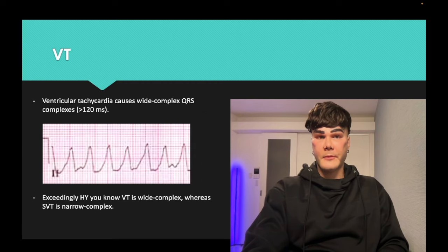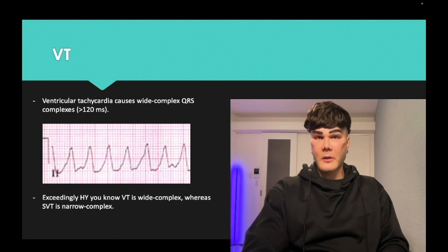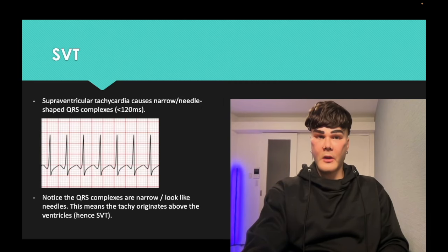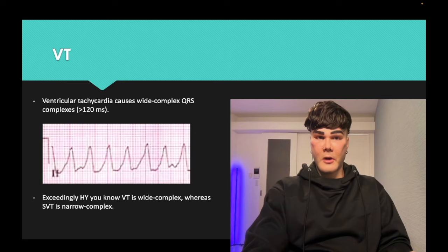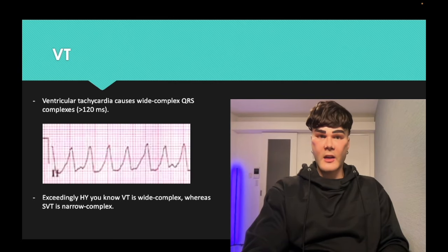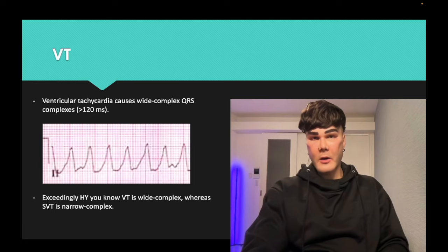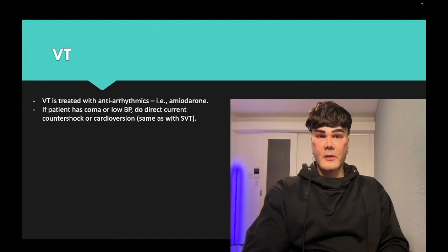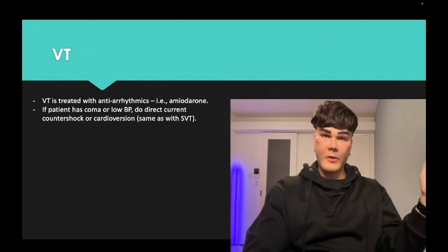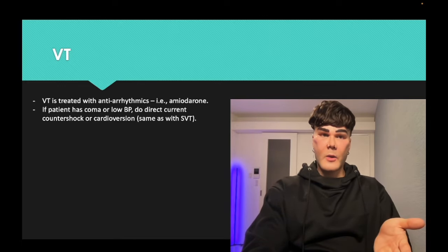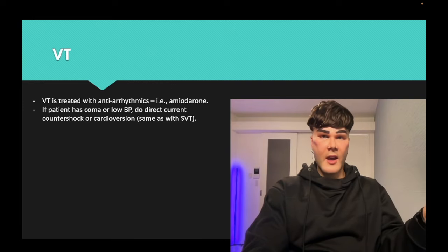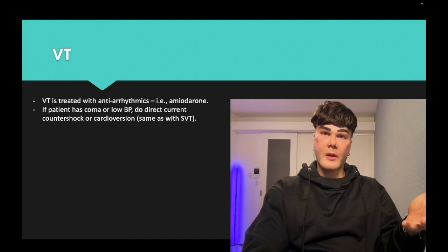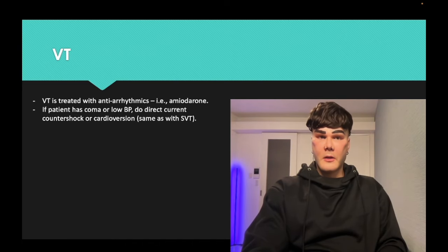For VT, contrasting with SVT, the ECG complexes are wide — they look like mountains, not needle-shaped. Wide means ventricular. The answer is just ventricle if asked where they originate from. Antiarrhythmics like amiodarone can be used for treatment. The vagal maneuver sequence is for SVT, not VT. Whether it's SVT, VT, or AF, when you have hemodynamic instability, you do direct current countershock or cardioversion.